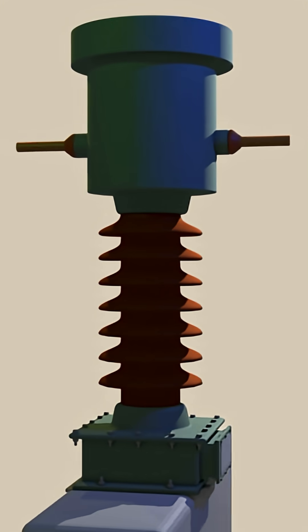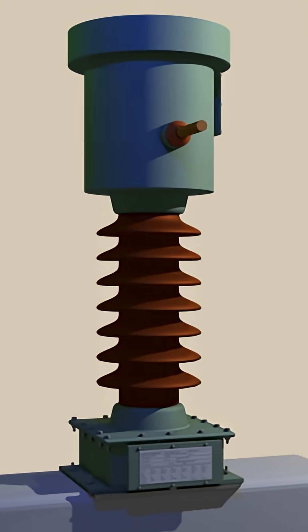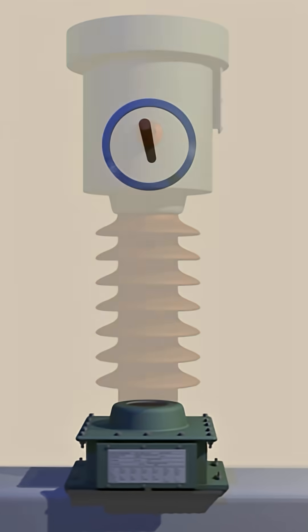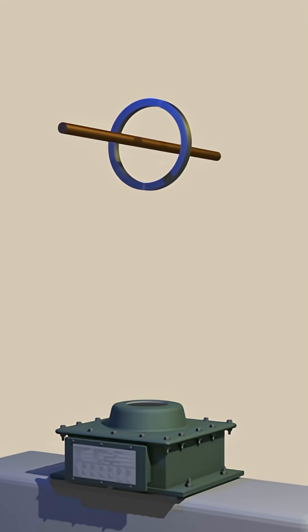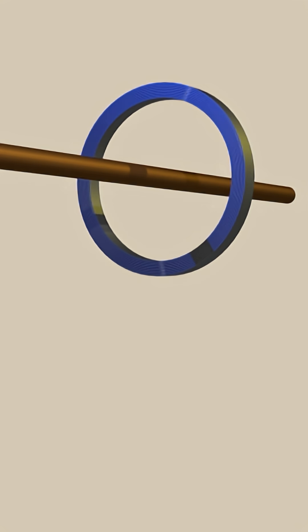In this video we shall discuss each part of the live tank current transformer one by one. This rod like part serves the purpose of the primary winding. This is an iron core that surrounds the primary.